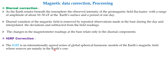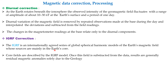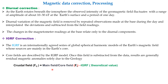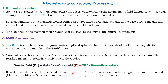By subtracting the IGRF — the theoretical value — from the main field where sources are in the outer core, we get the residual magnetic anomalies attributed to geology. We need that thin crustal field anomaly. After all corrections, the raw data from any platform must be inspected for spikes and gaps, and instrumental noise and irregularities must be removed from the magnetic data.